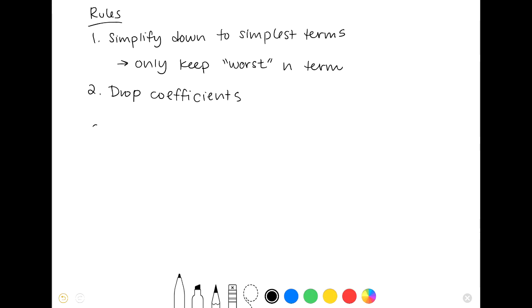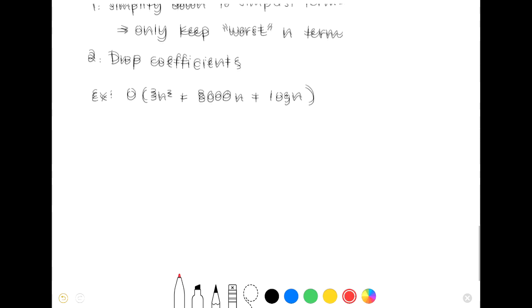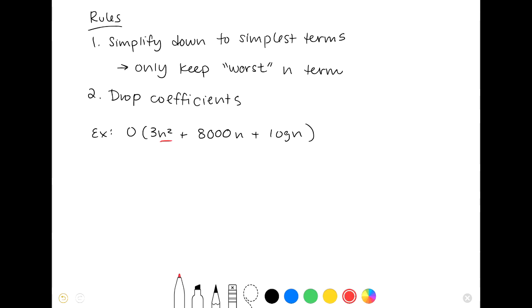So as a quick example, let's say we have O of 3n squared plus 8,000n plus log n. So quickly going through this, we can identify that n squared here, this is our worst n term. And so because of that, we don't really care about the other two because we know that at its worst, we can simplify this down to an n squared complexity. So we can get rid of these two. And so then we're left with O of 3n squared. And then because coefficients don't matter, we can also slash out the 3, which leaves us with O of n squared.